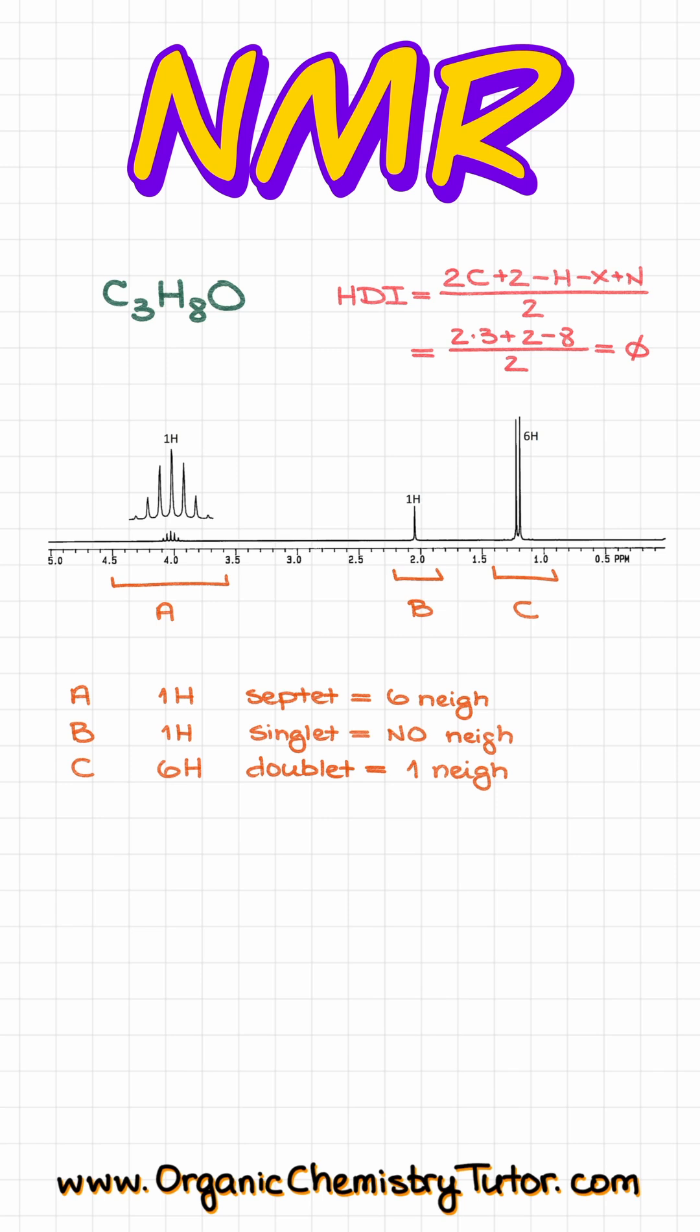So, what I'm seeing here is that I have six hydrogens which are next to one neighbor, and I have one hydrogen next to six neighbors, which would be an isopropyl fragment, where my proton A is this guy with six neighbors, and my protons C are those guys, each of which only has one other neighbor in the form of the proton A.